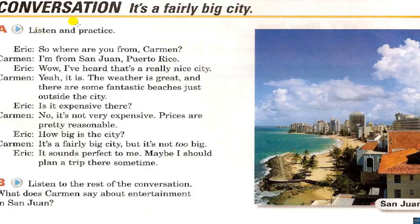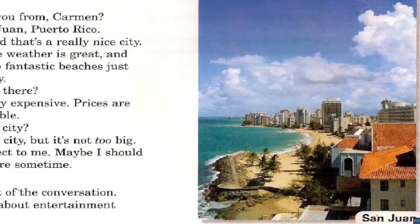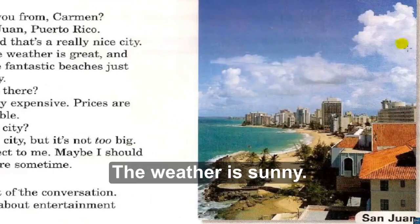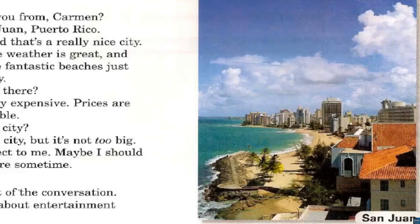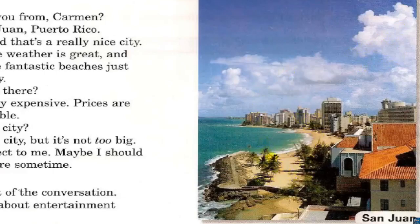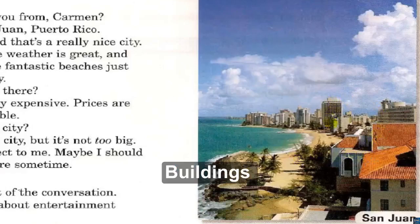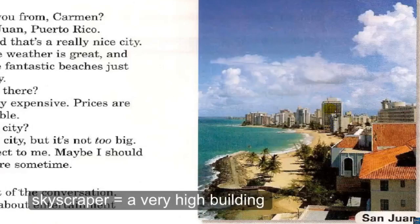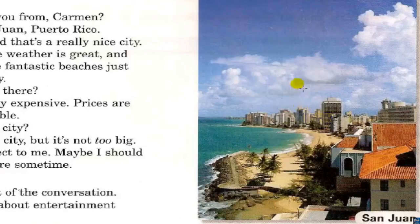Conversation: It's a fairly big city. Look at the picture — what do you see? The weather is sunny. A cloud, beach, palm trees — four, five, six, seven palm trees — a beach house.